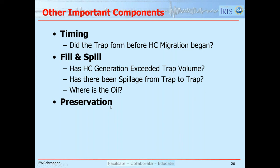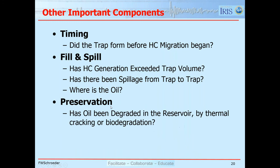The third secondary component is preservation: has oil trapped in the reservoir been degraded? Oil degradation happens in two ways. First, thermal degradation: if the reservoir gets too hot, longer oil chains will crack and eventually break down to methane or gas. The other possibility is the reservoir is too cool — bacteria can get into the reservoir and start to consume the longer-chained hydrocarbon molecules, leaving behind something you wouldn't want to put in your gas tank. We call this biodegraded oil or heavy oil, which is getting close to being tar.